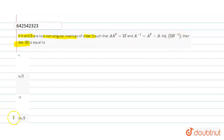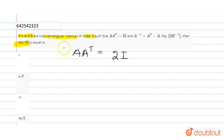Let's start the question from what is given. First of all, we are given that A into A transpose equals 2 into I. We are also given that A and B are two non-singular matrices of order 3, which means the determinant of neither A nor B is 0 — they must each have a non-zero determinant.